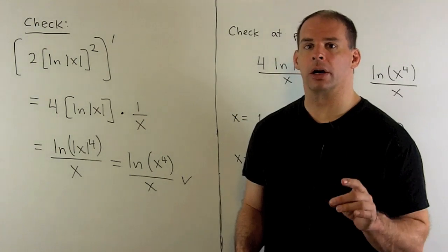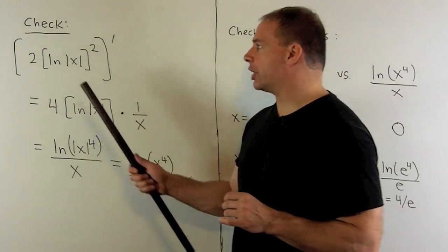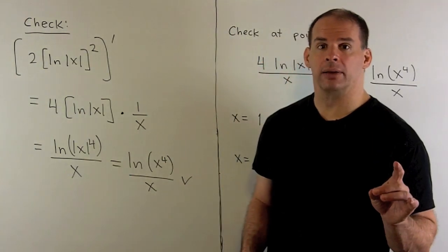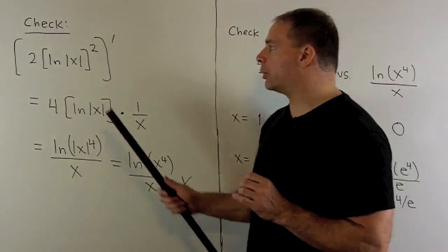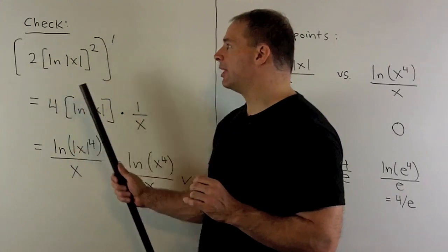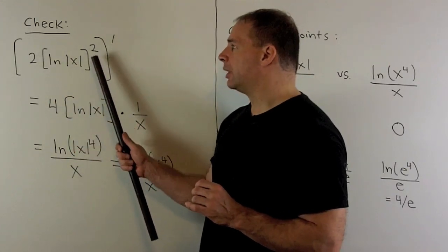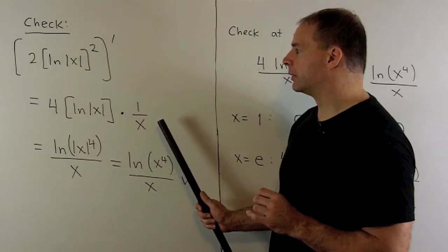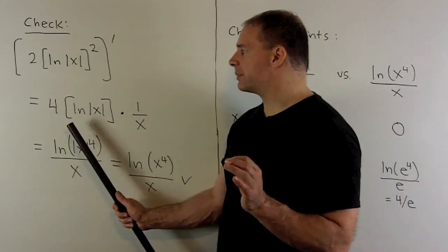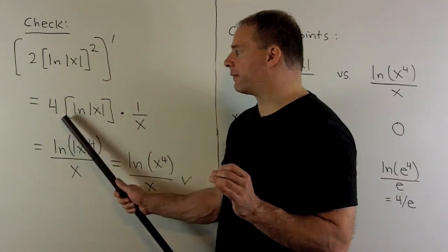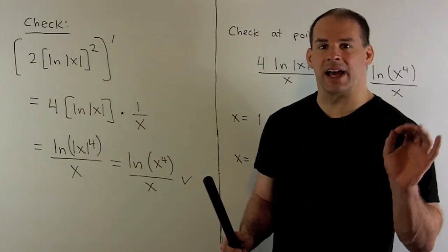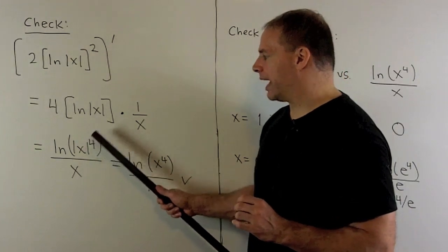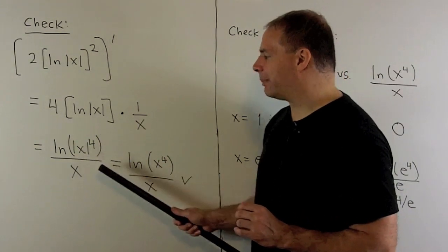Of course, we check our work — we're going to take our answer, take its derivative, and see if we get our integrand back. Here we use the chain rule: the 2 comes down, the new exponent is 1, we take the derivative of the inside and get 1 over x. To simplify this, I can take the 4 out in front and move it to the inside of natural log as an exponent. So we'll get natural log of absolute value of x to the 4th power, divided by x.